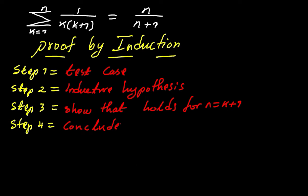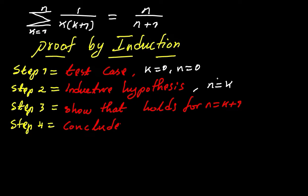In today's video we're going to be looking at proof by induction. Generally, to prove by induction we have four steps to follow. The first step is called the test case, where you need to verify it's true for initial values — say for k equal to zero and n equal to zero. The second step is called the inductive hypothesis, where we assume it is true for n equals k. Then step three, we show that the inductive hypothesis holds for n equal to k plus one.